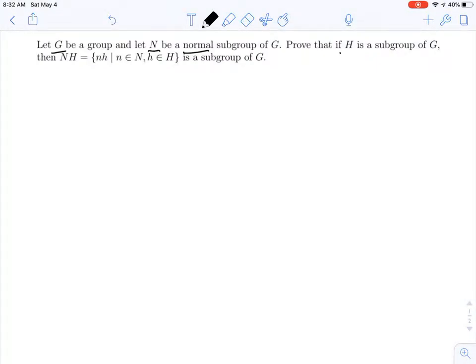Then you have some arbitrary subgroup H, and we're going to look at this product set called N times H, which you take an element from N and you take an element from H, multiply those, you get an element. Now do that for all elements of N and all elements of H. And you take that whole collection and the claim is that this is a subgroup.